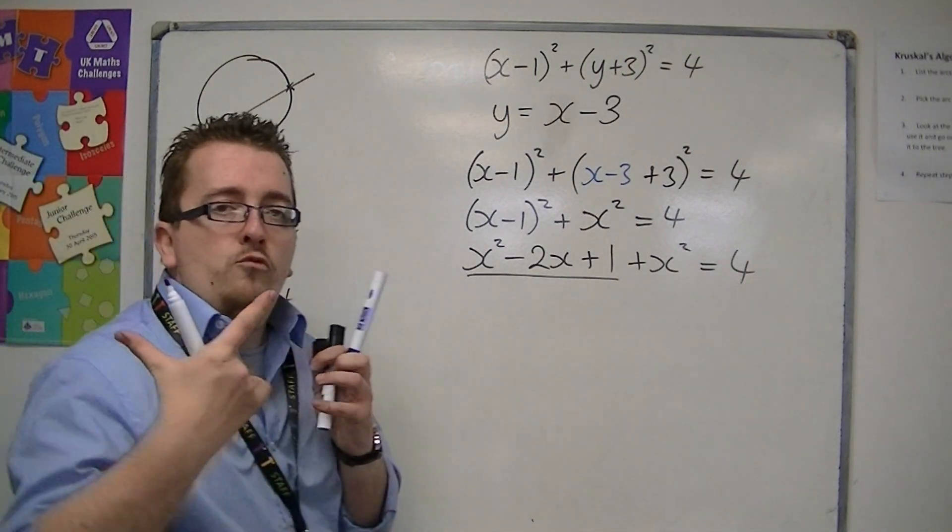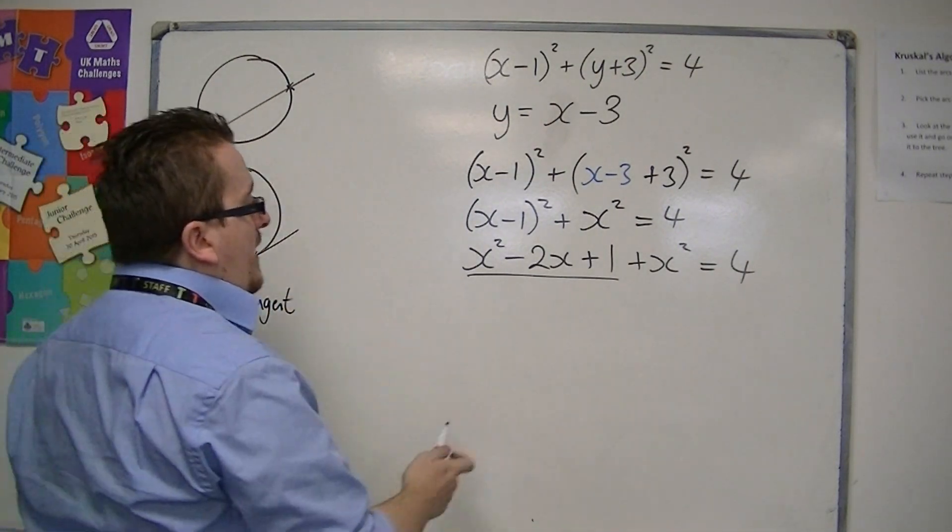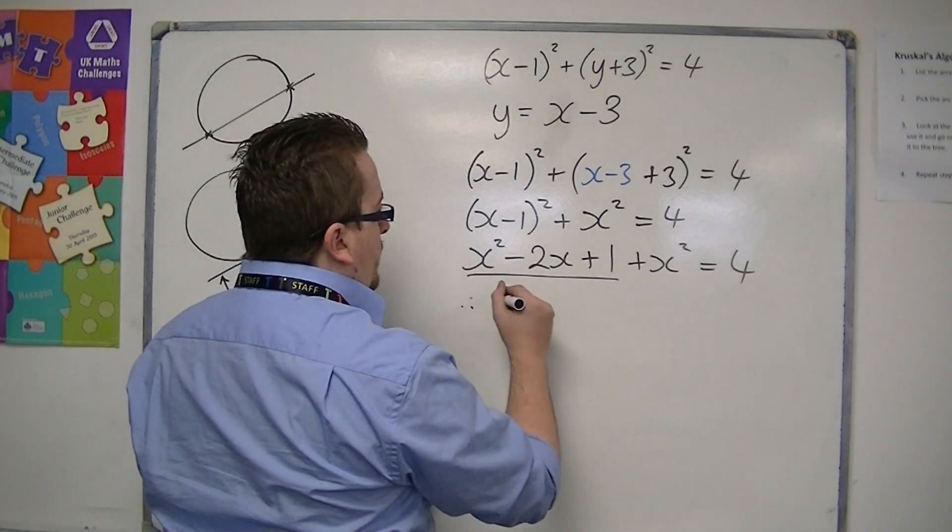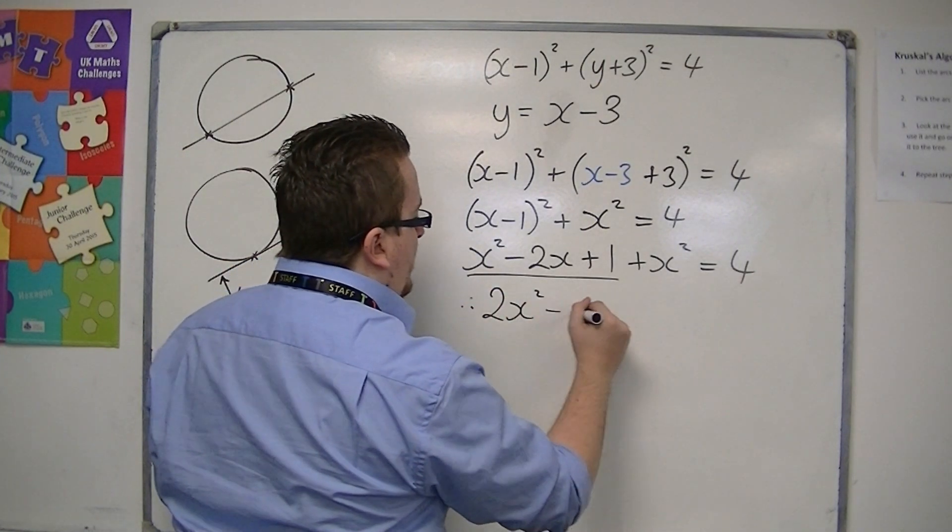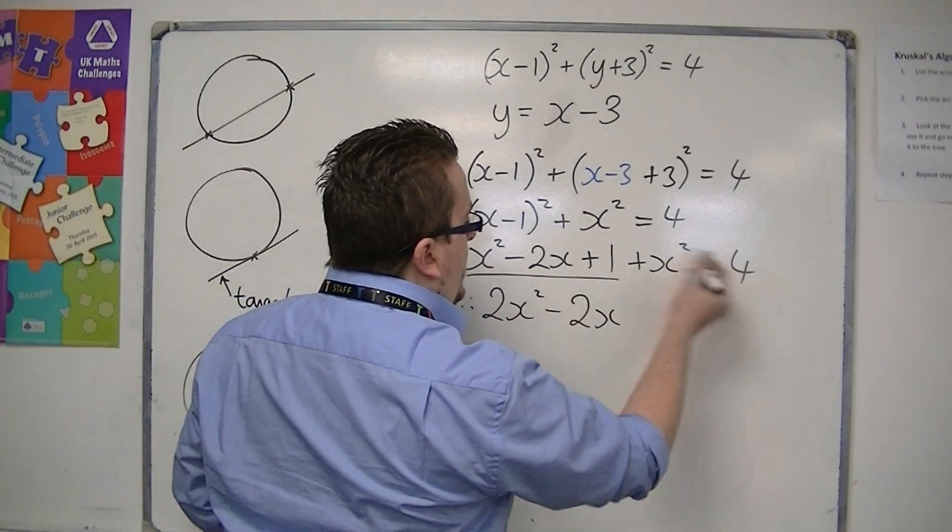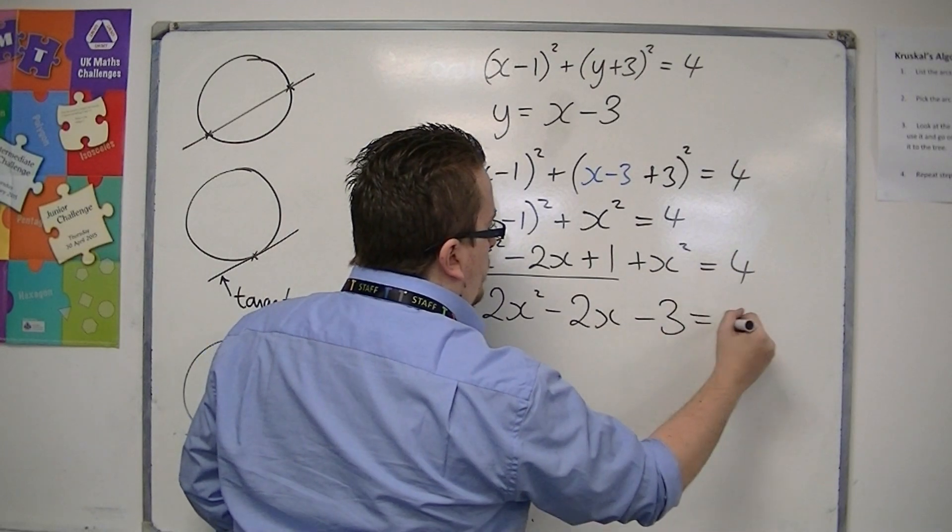And then rearrange everything so we get everything onto the left-hand side. So we've got two x squared, take away two x, and then take four from both sides would be minus three is zero.